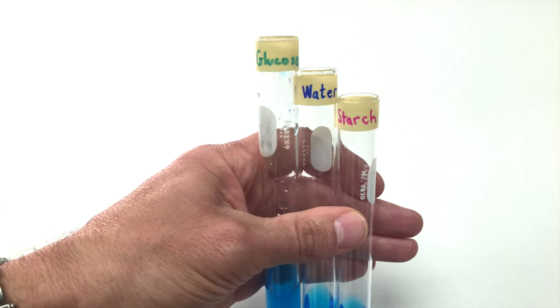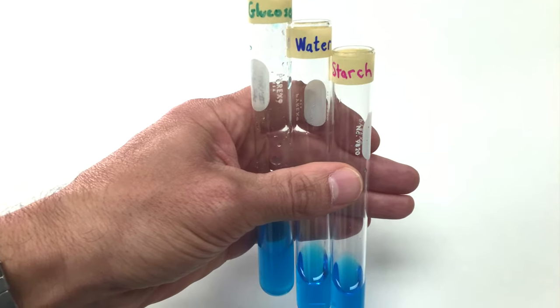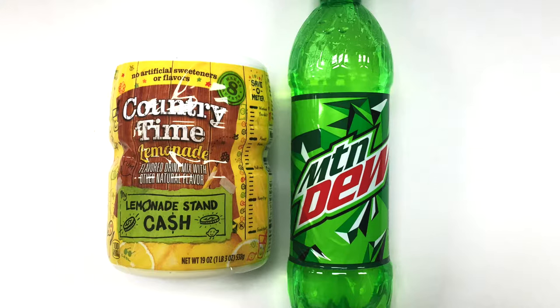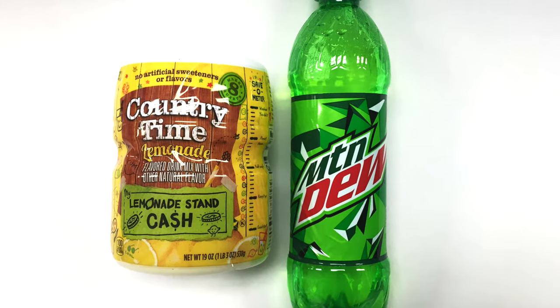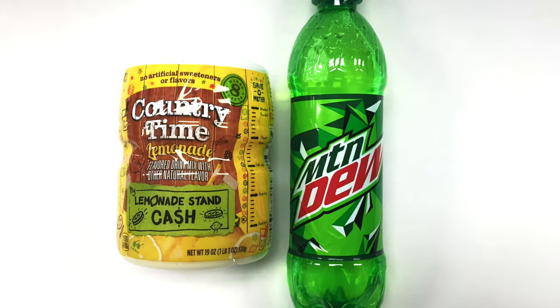What I'm going to show you is my version of the dialysis tubing experiment. So first I've got to make a Benedict's solution test and I've got a solution of Benedict's and glucose and I'm going to use Mountain Dew or Country Time Lemonade for that.